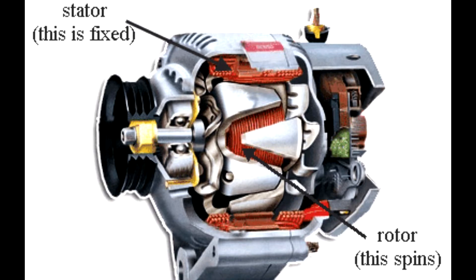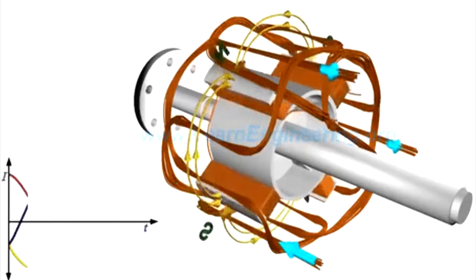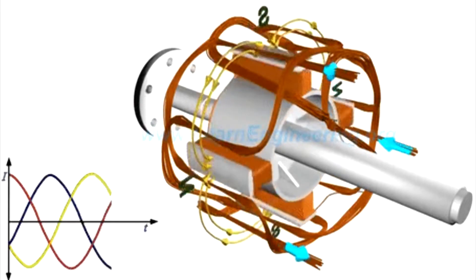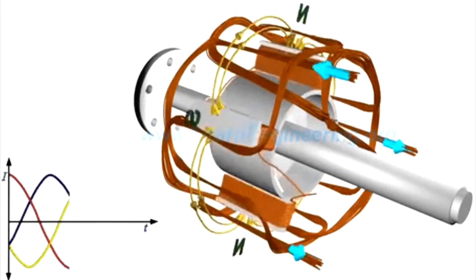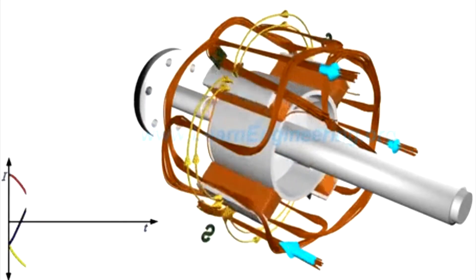The alternator works like a power generator, converting the engine's mechanical energy into electricity to charge the battery or run other electrical systems while the engine is running. The battery provides power to the starter for engine start.